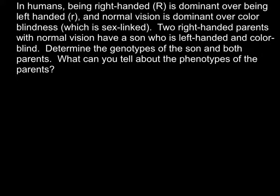Today's problem is: in humans, being right-handed — capital R — is dominant over being left-handed, small r, and normal vision is dominant over colorblindness, which is sex-linked. Two right-handed parents with normal vision have a son who is left-handed and colorblind. Determine the genotypes of the son and both parents, and what can you tell about the phenotypes of the parents.